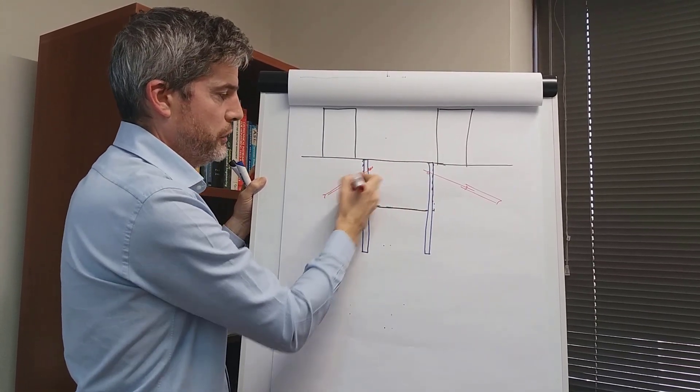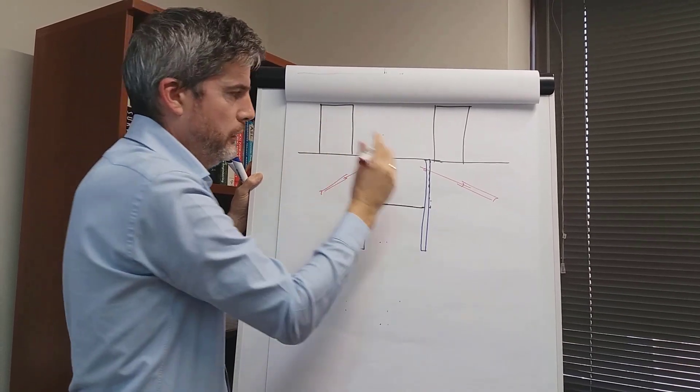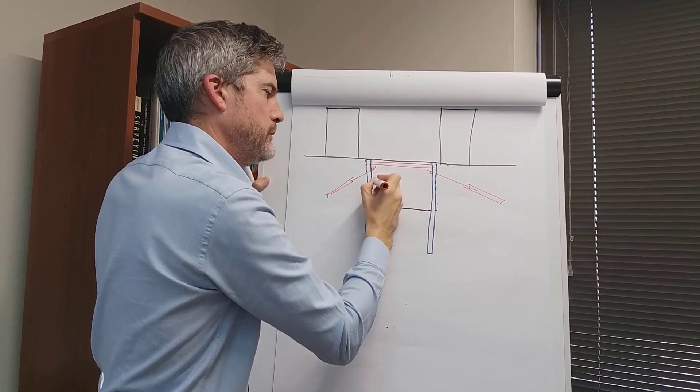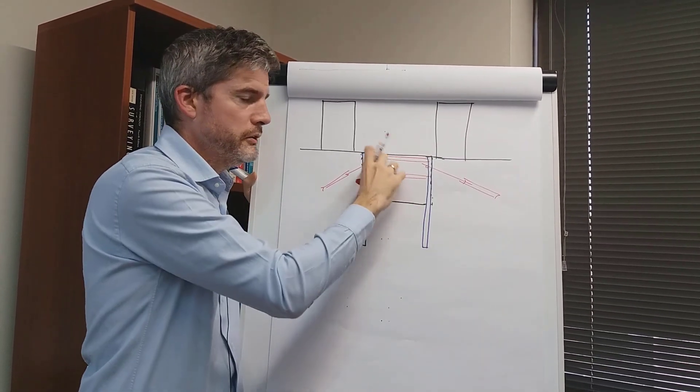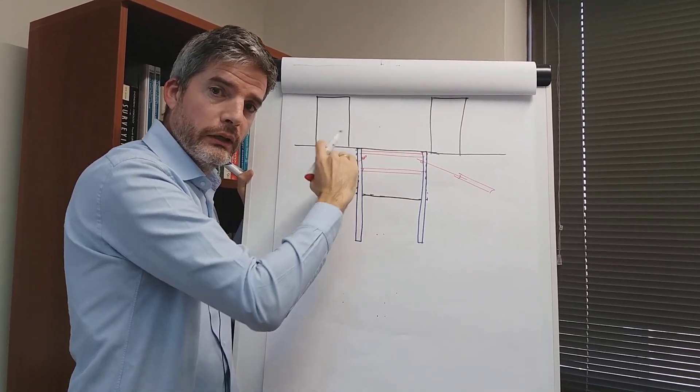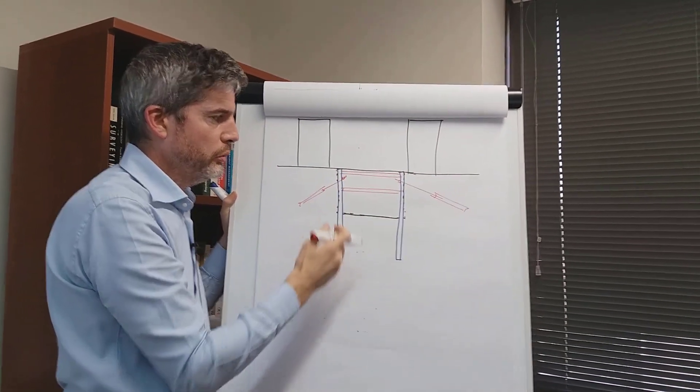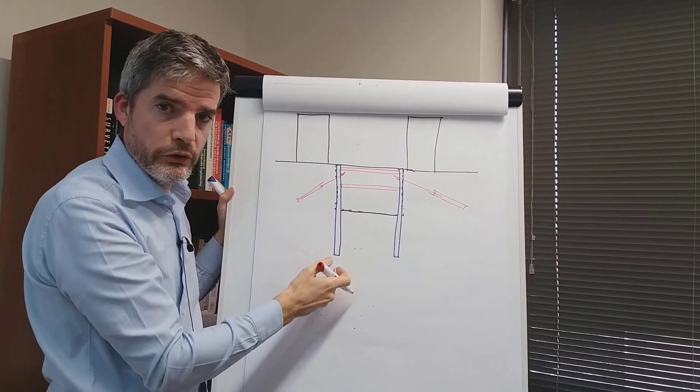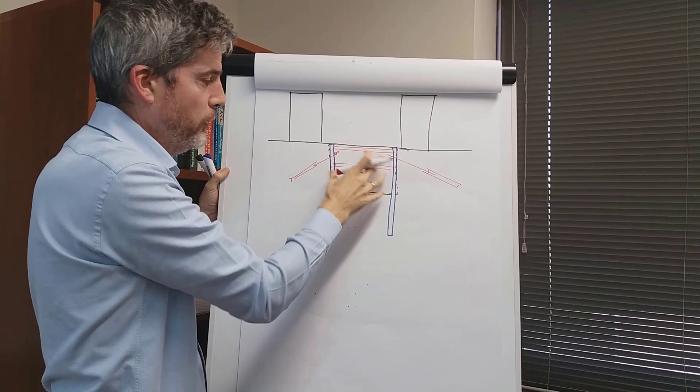Or you can use supports internally, because there are restrictions on anchors going under other people's property, and also there may be a basement here as well. So often you have no alternative but to use struts internally within the basement. These can be temporary, or you can use the floor slabs in the building as a permanent support as well.